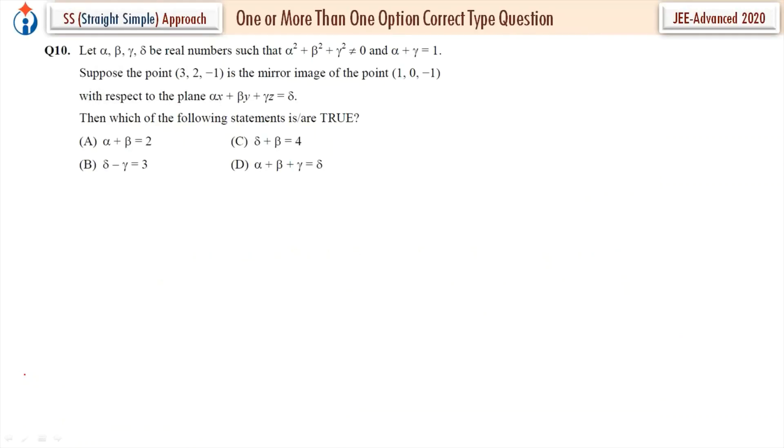Question number 10. Let's comprehend what is given. Let α, β, γ, δ be real numbers such that α² + β² + γ² is not equal to 0 and α + γ is equal to 1.